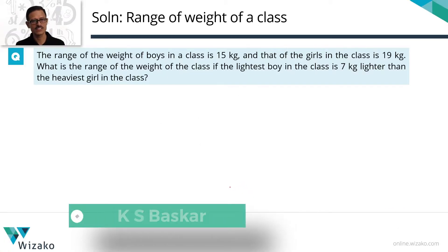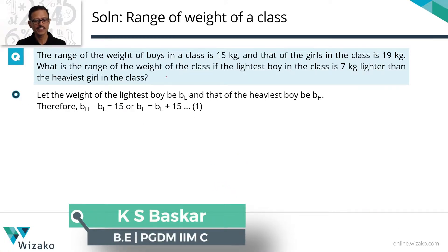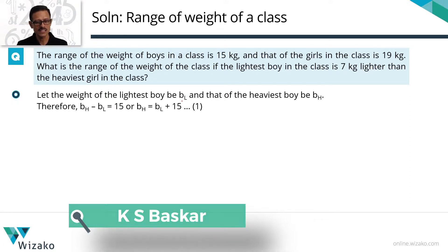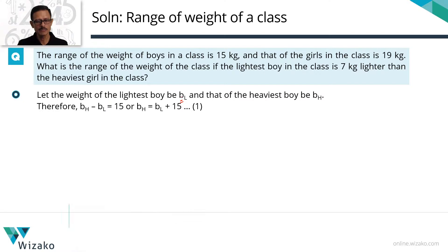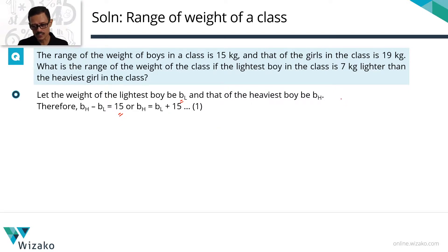Let's make sense of each statement. The first statement: the heaviest boy minus the lightest boy — the difference is 15 kg, the range is 15 kg. I'll assign two variables: let the weight of the lightest boy be BL (B for boy, L for lightest) and the heaviest boy be BH. So BH minus BL equals 15, or BH equals BL plus 15. On a number line, BL to BH, this gap is equal to 15.